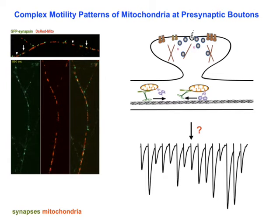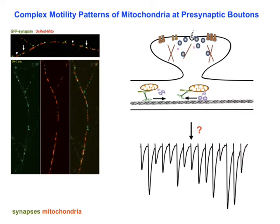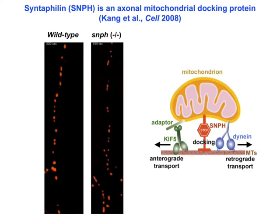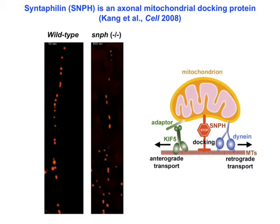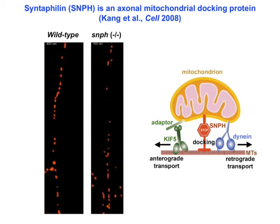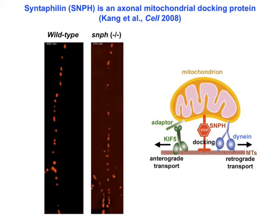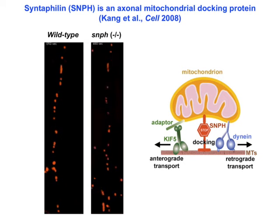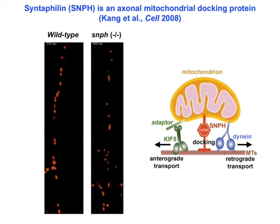This raises a fundamental question: can those motile mitochondria contribute to the variability of synaptic transmission? My laboratory recently identified a protein named syntaphilin, which functions as an axon mitochondria docking receptor.